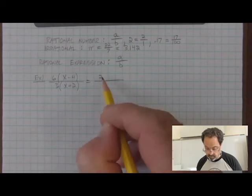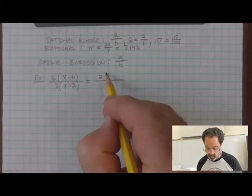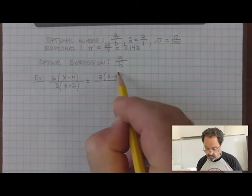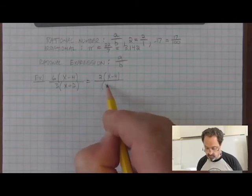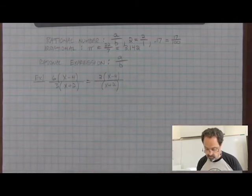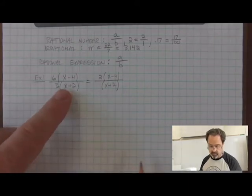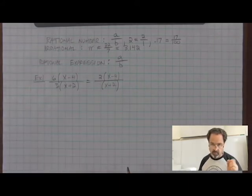So we can reduce the part six divided by three to two. There are two threes in six. The three cancels out to become one. And the factor x minus four is still in the numerator and x plus two is still in the denominator. So we simplified this rational expression a little bit.